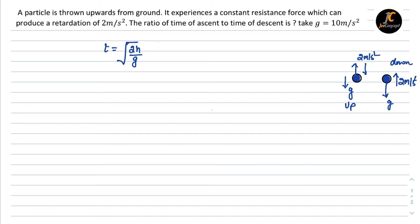In the upward scenario, this is going to be t_up = √(2h/(g+a)), where we add the retardation a to gravity g since both act downward during ascent.